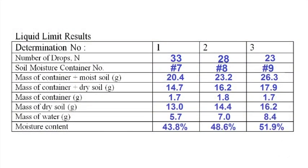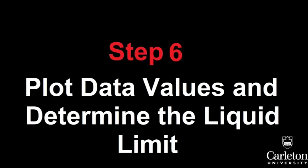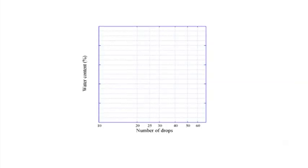Using the data recorded, calculate the moisture content of each test. As was mentioned before, each successful test corresponds to one data value that will help us determine the liquid limit. The data will be plotted on a graph like this.